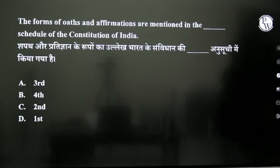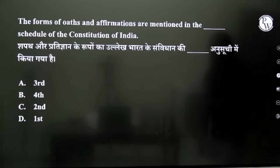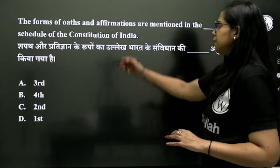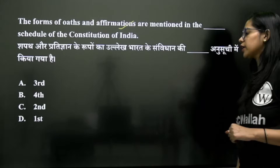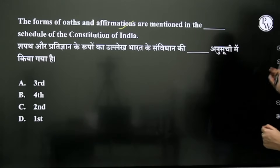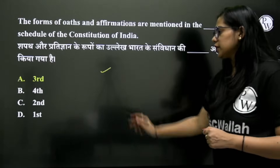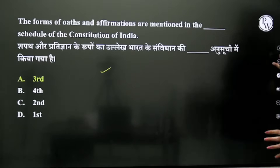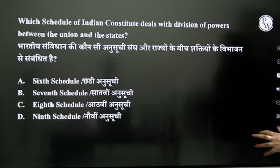The form of oath and affirmation — in which schedule of the Indian Constitution is it mentioned? The answer is the 3rd Schedule. This is used for central or cabinet ministers.